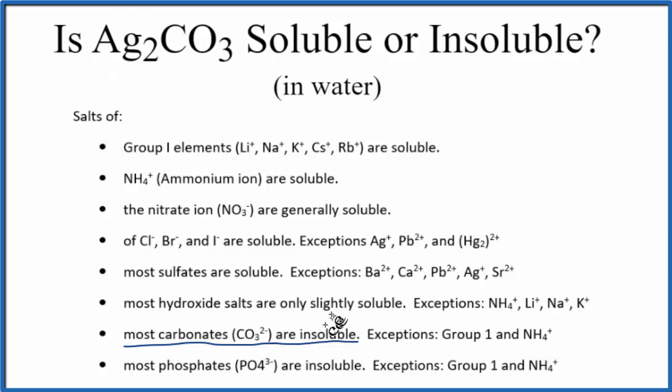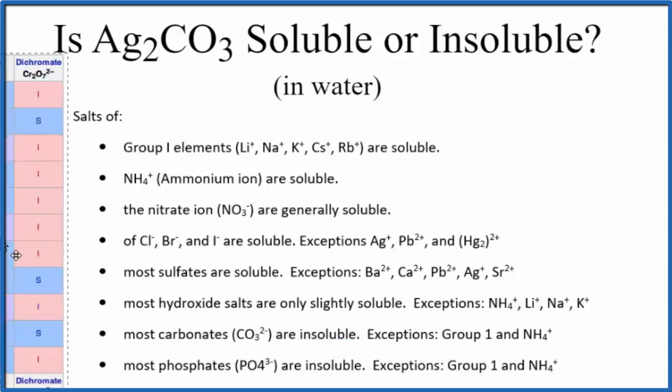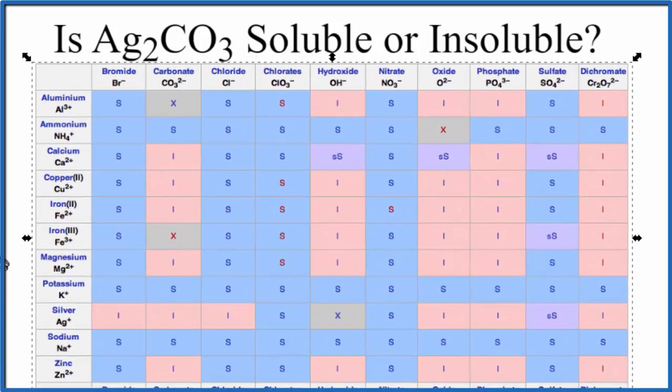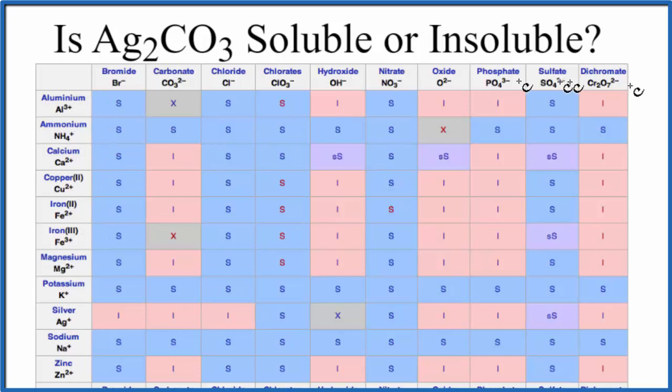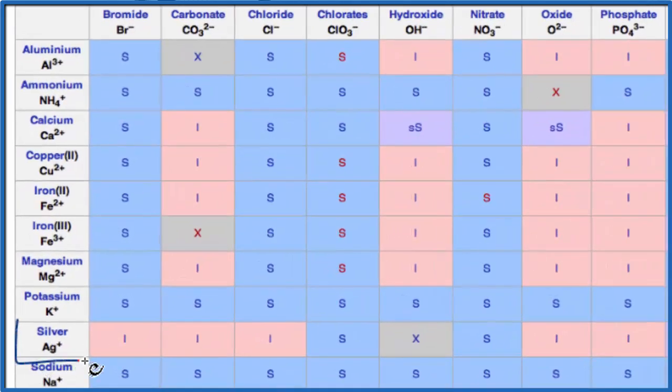So according to the solubility rules, we expect that silver carbonate is going to be insoluble. We could also look at a solubility chart. So here is a solubility chart, the positive ions here on the left, the anions, the negative ions, on top, looking for silver. Here's silver Ag+, and then across the top the carbonate CO3, that's CO3 2- minus.